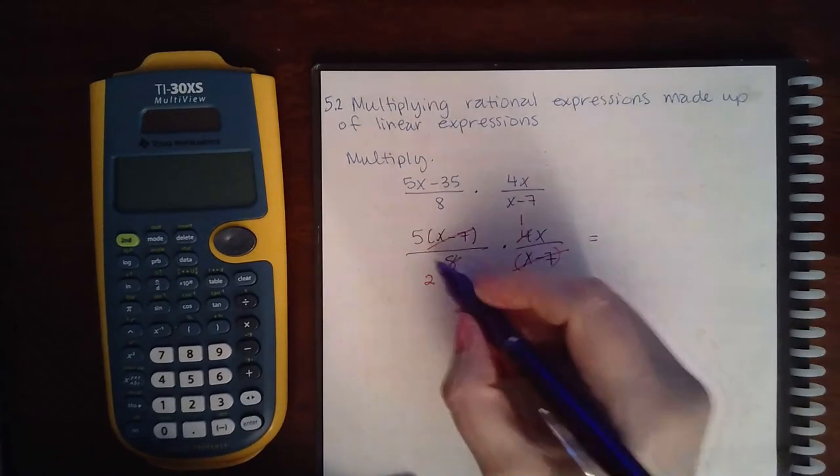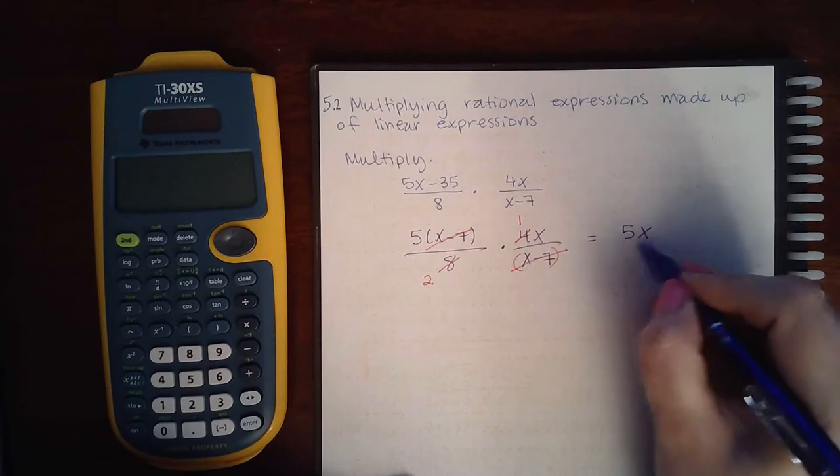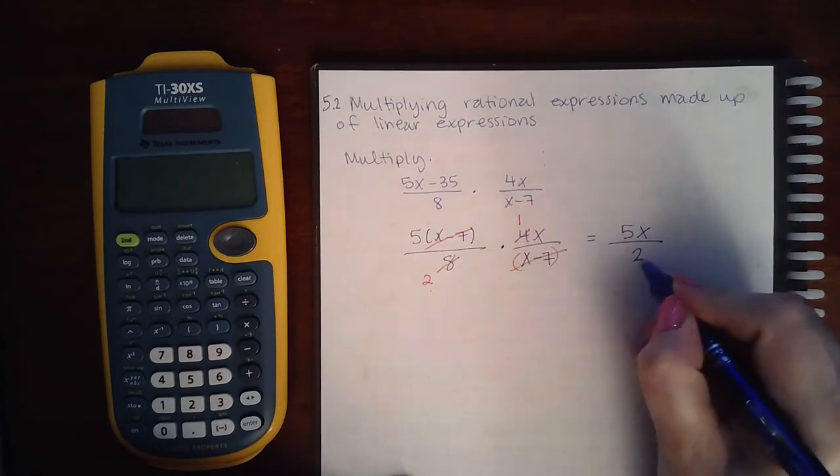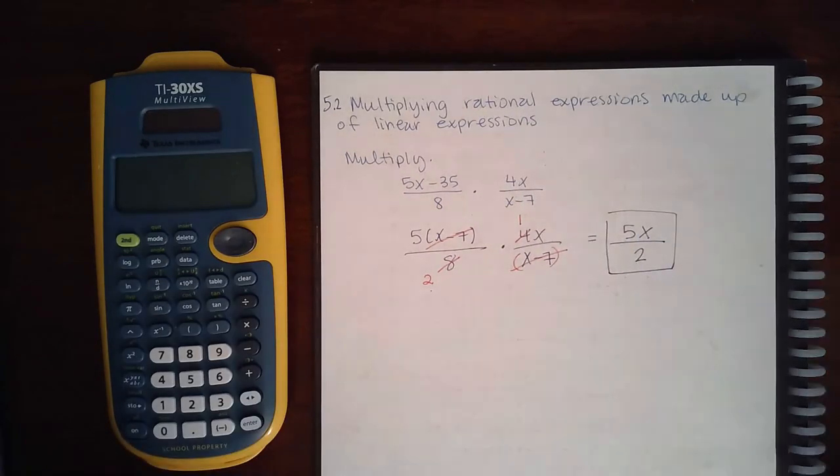What I have left is 5 times 1, which is 5. I have this x that is still there, and then a 2 at the bottom. This cannot reduce anymore, so that is the final answer.